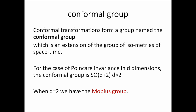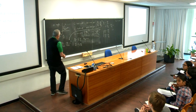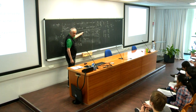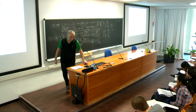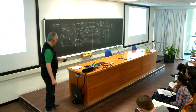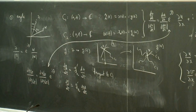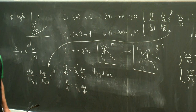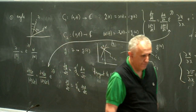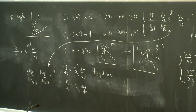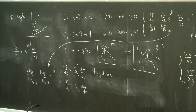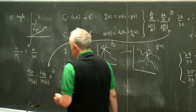Student question: the hypothesis was that g is a conformal mapping — where did you use that hypothesis? Answer: I used it in the fact that g is only a function of Z, not of Z-bar. Student follows up: is any mapping that is just a function of Z a conformal mapping? Answer: yes, but I'll explain a little bit more now.